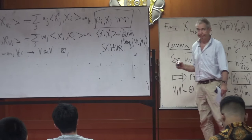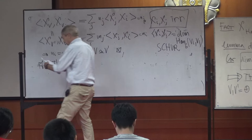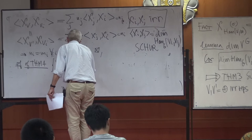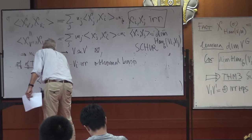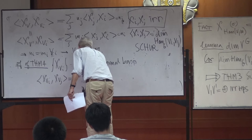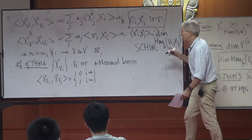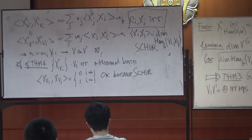Now, Theorem 4. Theorem 4 says that the characters of the irreducible representations are an orthonormal basis. The fact that they are orthonormal says that the scalar product of chi_{V_i} and chi_{V_j} is zero if i is not equal to j, and one if i equals j. That is precisely the content of Schur's lemma, because this is the dimension of Hom_G(V_i, V_j). So they are a set of independent vectors of length one that are orthogonal. What we have to show now is that their span is everything.